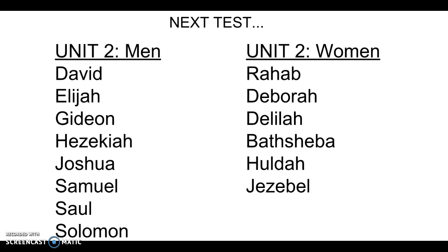When the Israelites conquer the town and slaughter everybody — men, women, children, old people, all the animals — they let Rahab and her family live. She's also going to appear later when we do the genealogies in the New Testament.